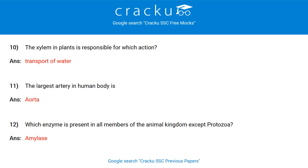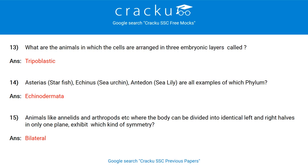The largest artery in the human body is the Aorta. Which enzyme is present in all members of the animal kingdom except protozoa? Amylase. What are the animals in which cells are arranged in three embryonic layers called? Triploblastic animals. Asterias, Echinus, and Antedon are all examples of which phylum? Echinodermata.